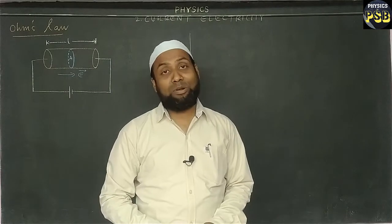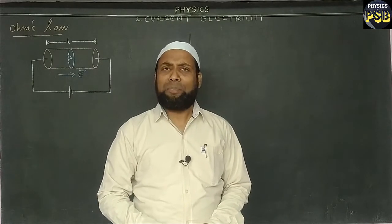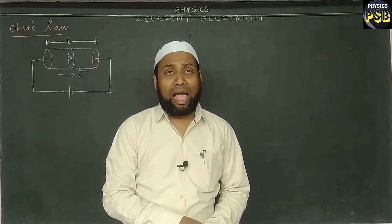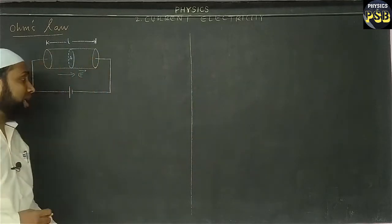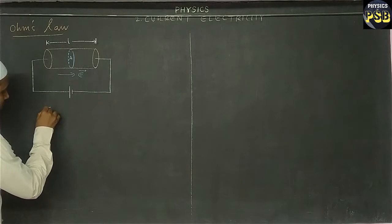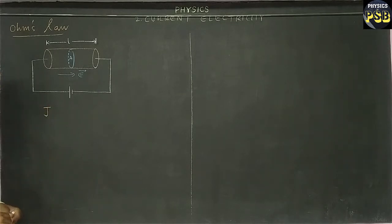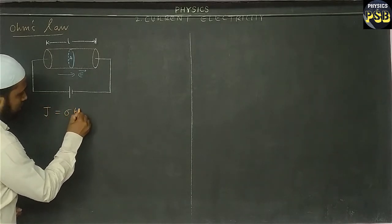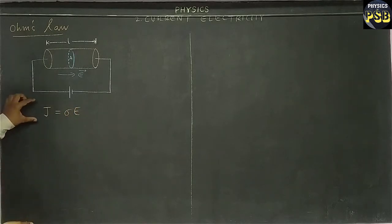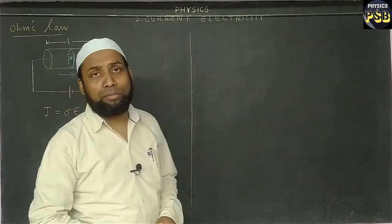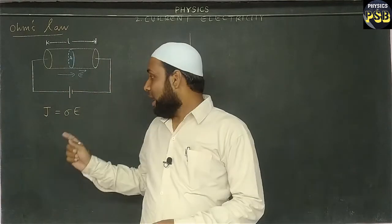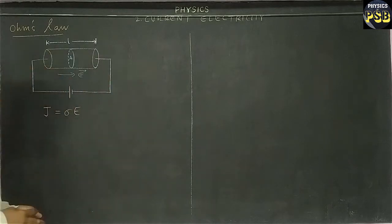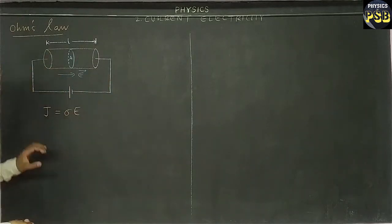Let me provide the expression for Ohm's law. In the previous video, we obtained an expression for current density, which is known as J equals sigma E. This is the magnitude of current density and it is known as the microscopic form of Ohm's law. With the help of this, I am going to derive Ohm's law.